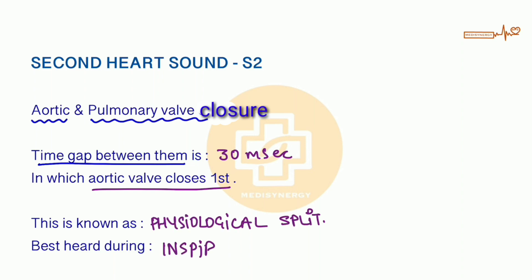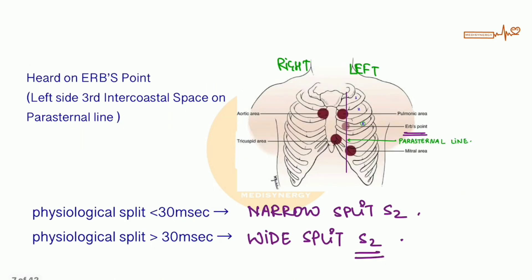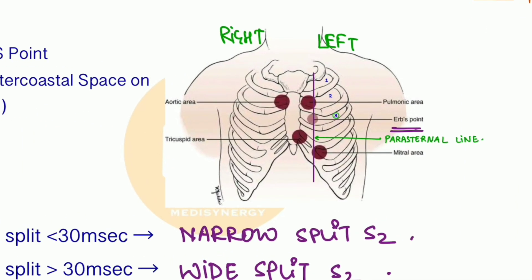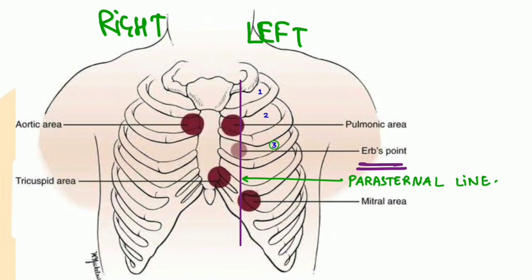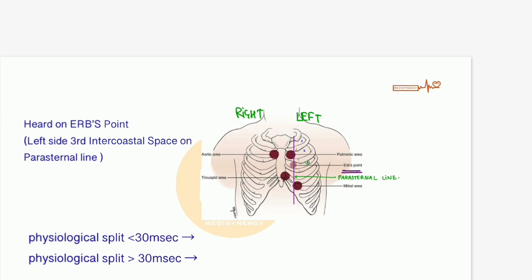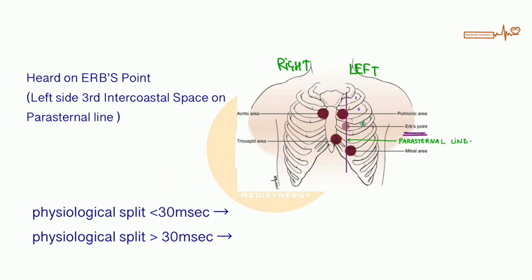Physiological split is best heard during inspiration. We can also hear the second heart sound by placing the stethoscope on Erb's point, which is located on the left side at the third intercostal space on the parasternal line. If the physiological split is less than 30 milliseconds, we call it narrow split S2, and if it is more than 30 milliseconds, we call it wide split S2.